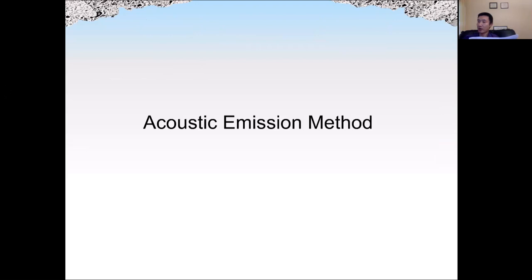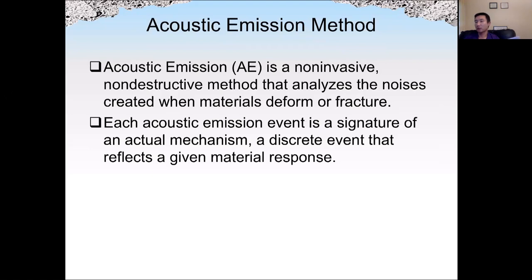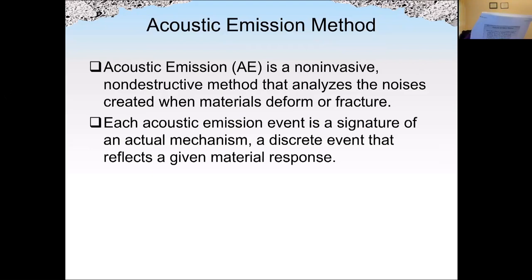The next method is acoustic emission. This method is similar to the impact echo or hammer method we discussed, but the source of the wave is different. The source in the acoustic emission method is passive — the noise is created when the material deforms or fractures. In other words, the noise or energy source is generated by the material itself — not by a hammer, not by a steel ball.